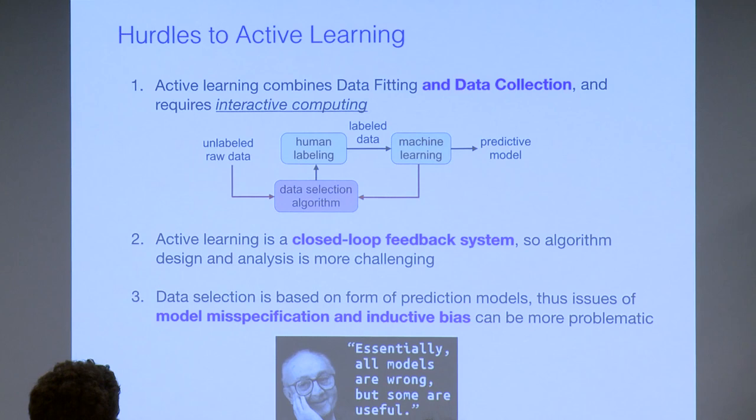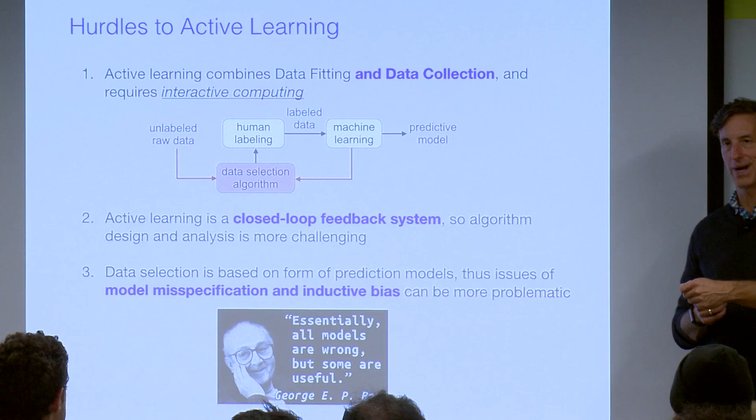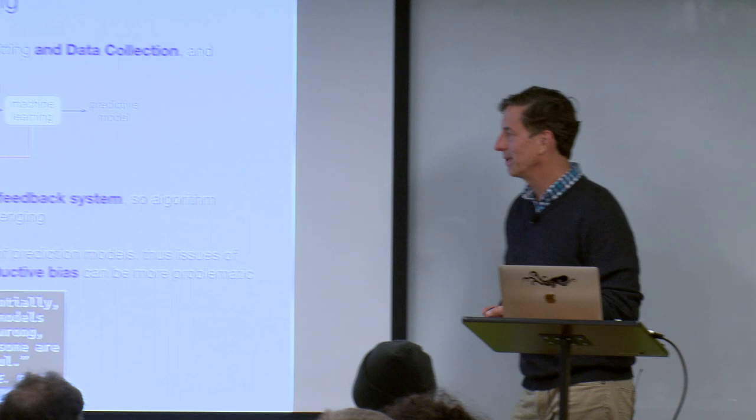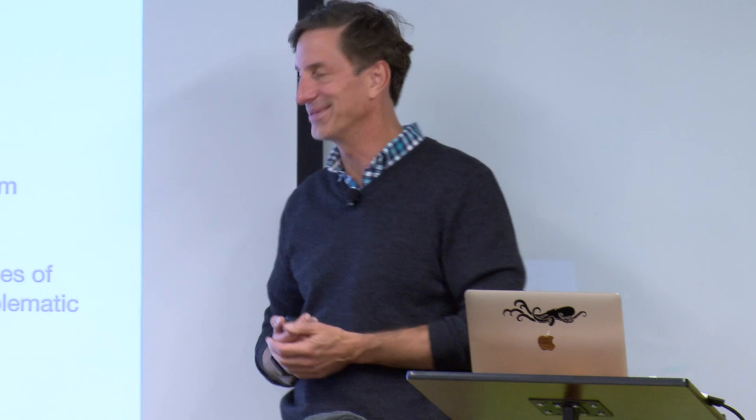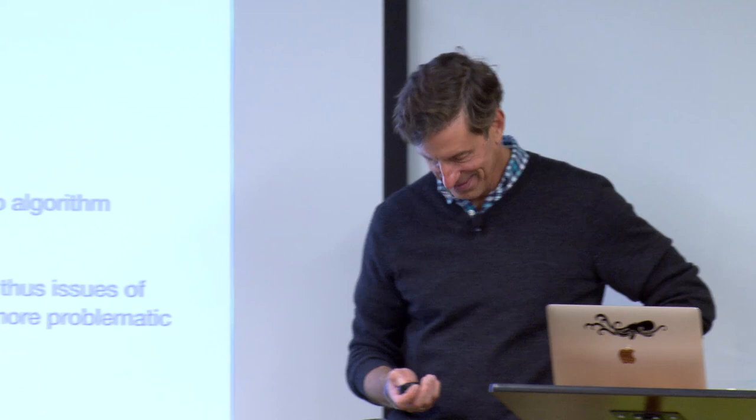Another challenge is that active learning is a closed-loop feedback system, making algorithm design and analysis more difficult — the mathematics are one level harder than normal open-loop systems. Finally, the data selection process is biased by the model structures used. Model misspecification and inductive bias can actually lead you into a bad solution altogether. Active learning leans heavily on modeling assumptions just to collect data, and that has to be carefully considered.